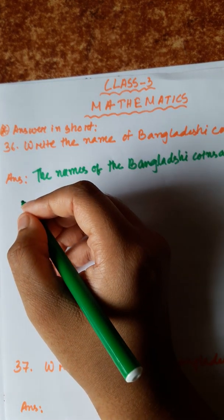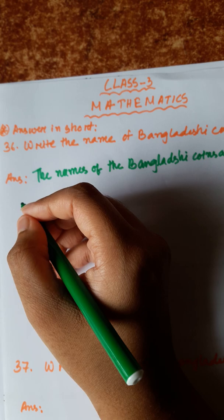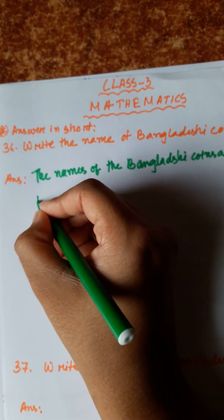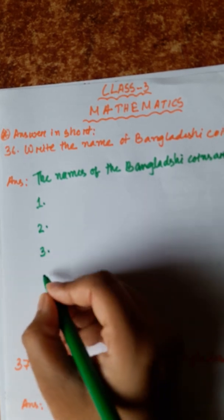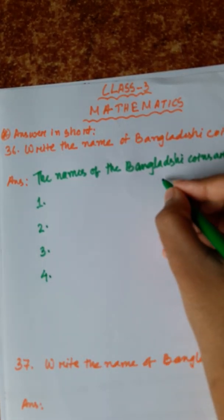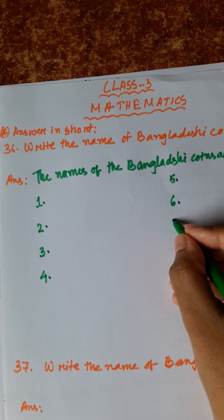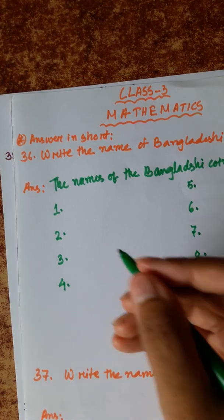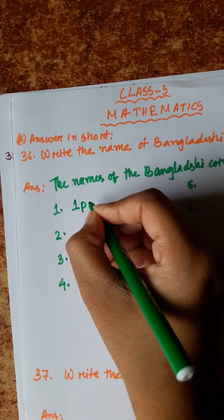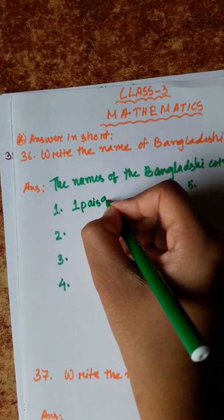So, 1, 2, 3, 4, 5, 6, 7, 8. So, first 1 Paisa,